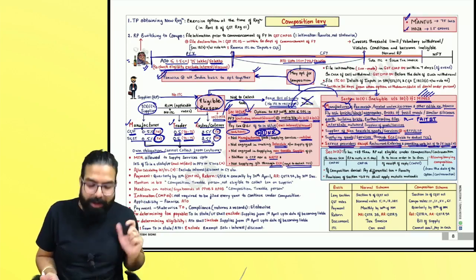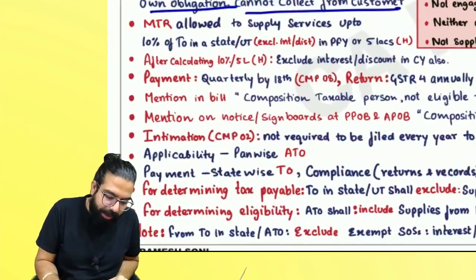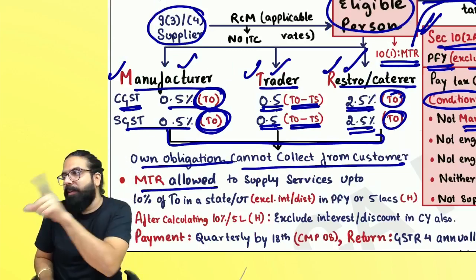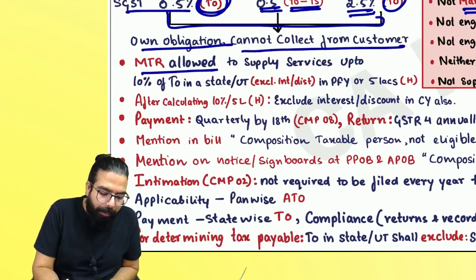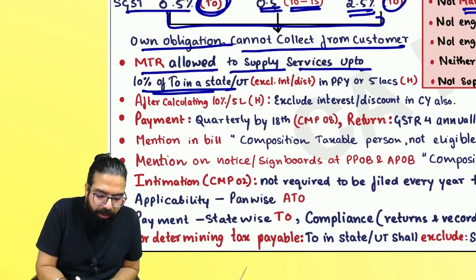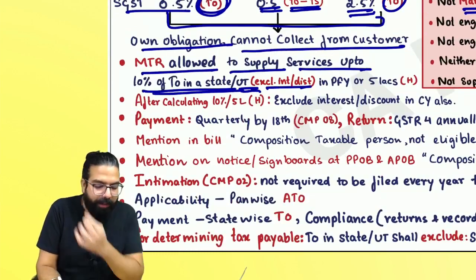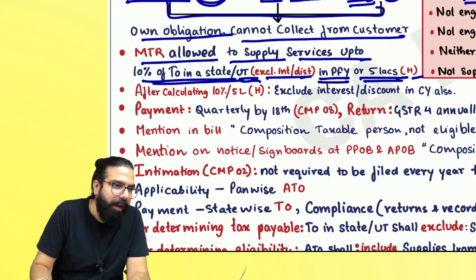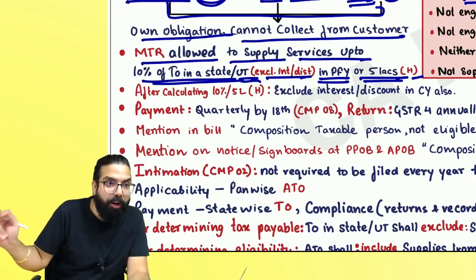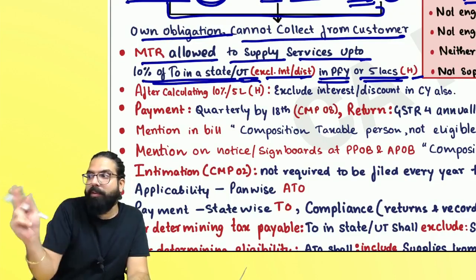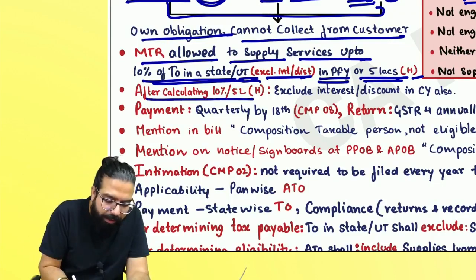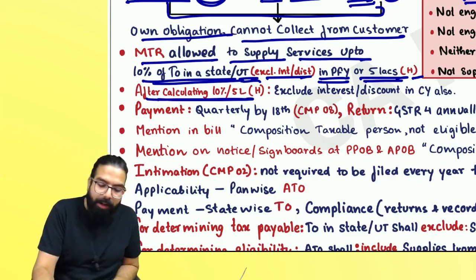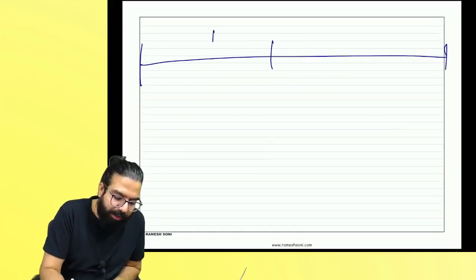MTR people are allowed to provide a little bit of services — marginal services. How much? Up to 10% of the turnover in the state in the preceding financial year, or 5 lakh rupees, whichever is higher. So you can provide services up to 10% of your state-wise turnover or 5 lakh, whichever is higher.